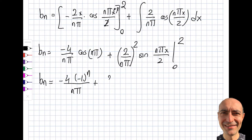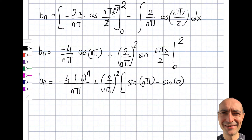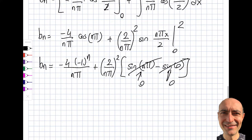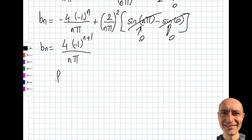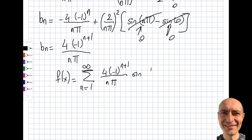Taking the remaining integral of cosine gives another factor of 2/(nπ), producing (2/nπ)² · sin(nπx/2) evaluated from 0 to 2. Since sin(nπ) = 0 and sin(0) = 0, that whole term drops out. Writing (-1)^n with a sign flip as (-1)^(n+1), the final Fourier series is: f(x) = Σ [4(-1)^(n+1)/(nπ)] · sin(nπx/2), summed from n = 1 to infinity.